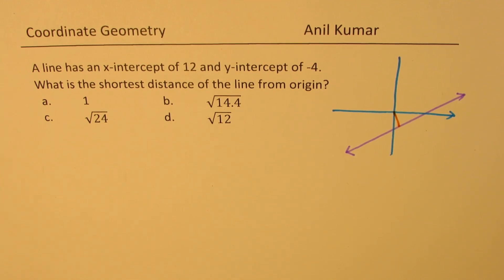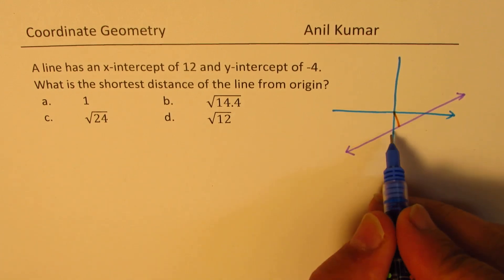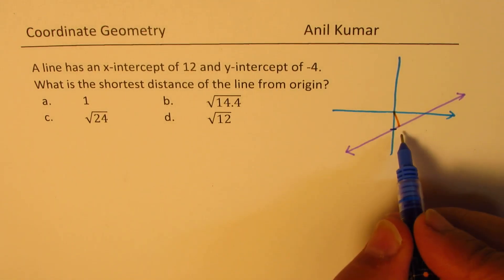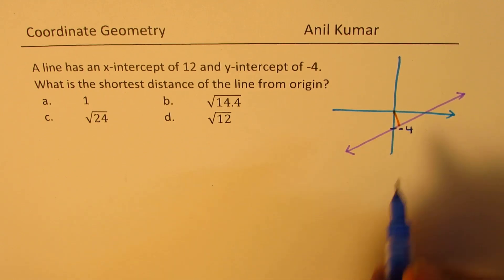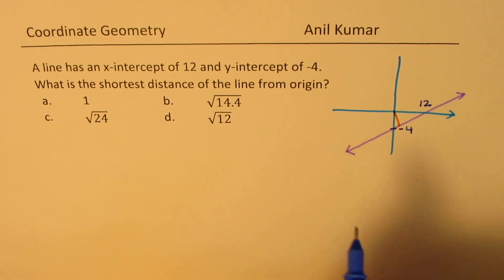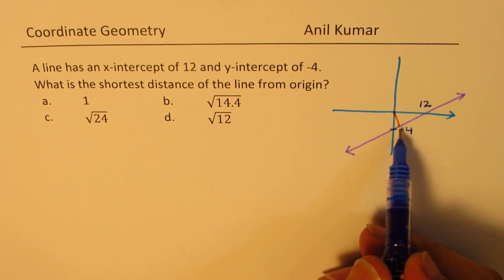In a multiple choice question, you can actually assume the answer. Since we are given the y-intercept of minus 4, x-intercept of 12, and that is the shortest distance, we can see that it is very close to 4 and definitely less than 4.